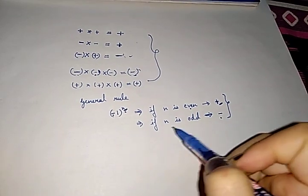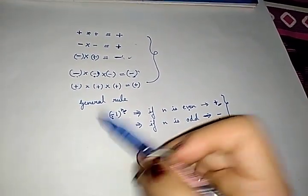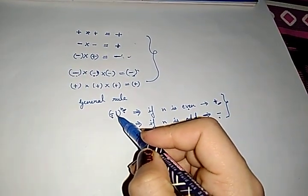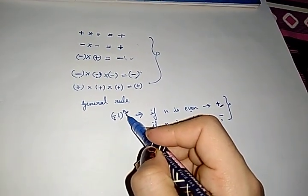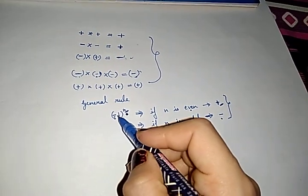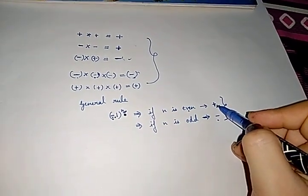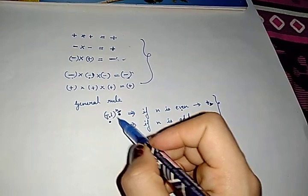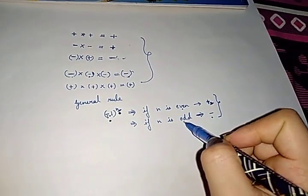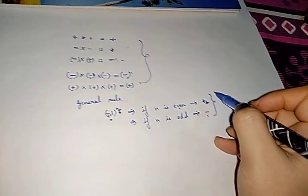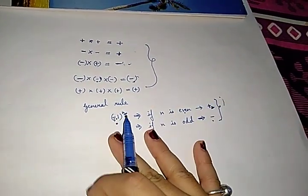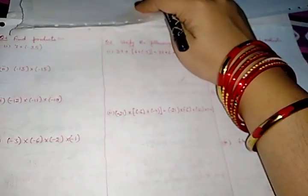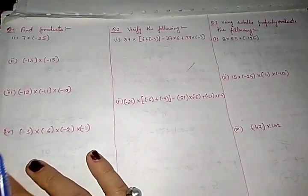Memorize these rules. If 2 or more integers are there and all have negative sign, and if there are an even number of negative integers, then your answer will come in positive. And if the number of negative integers is odd, then you will get a negative sign. This is the important rule for multiplication of integers. With the help of these, we are starting Exercise 1.3.